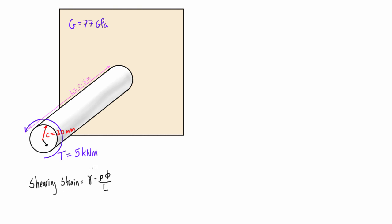There's a linear relationship between shearing strain and the radial distance out from the axis of the shaft, and also a linear relationship with the angle of twist. For any given length L we'll have a certain angle of twist. This means that the maximum shearing strain occurs at the maximum radial distance, which is when rho equals c — c being the maximum distance from the axis to the surface.